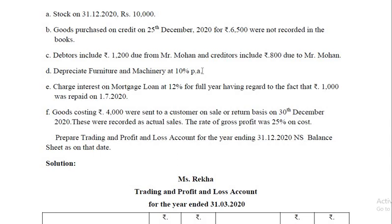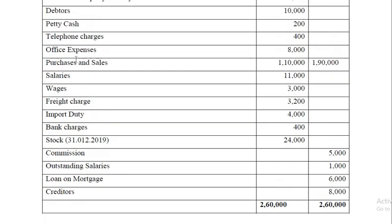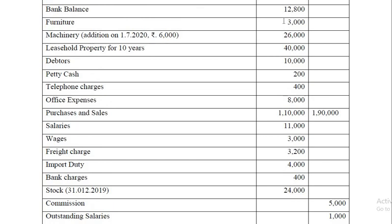Depreciate furniture and machinery at 10% per annum. Furniture is 3,000, so 10% gives 300. For machinery, the total value is 26,000. Of that, 6,000 was purchased in the middle of the year. So depreciation is calculated on 20,000 (26,000 minus 6,000) at 10% for the full year, and on 6,000 at 10% for half the year — from 1st July to 31st December. So 6,000 × 10% × half year.